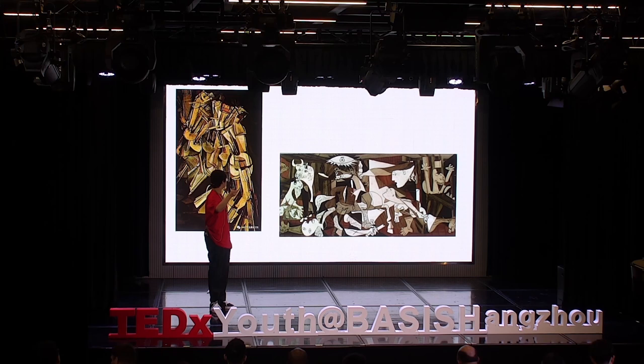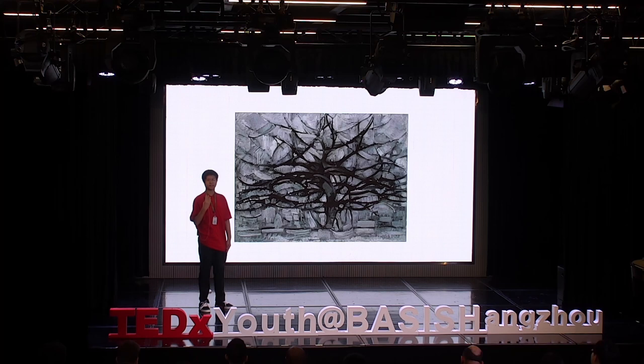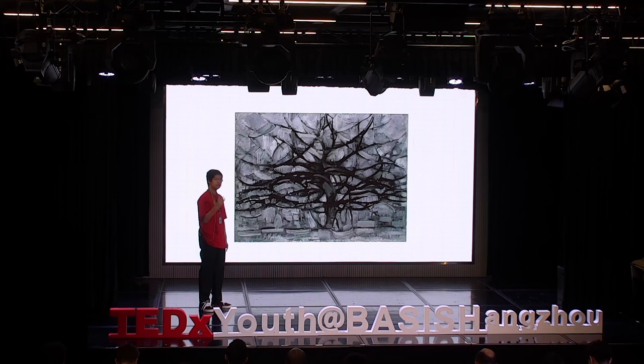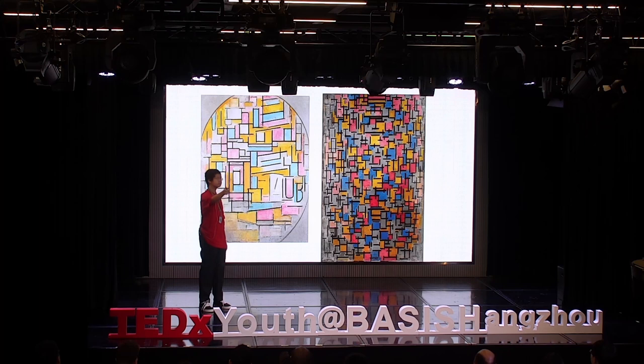As we see here, this is one of the paintings that Mondrian painted during this time. There is already a great shift between his earlier paintings and this one. He was painting a tree in this picture, using the classic Cubism approach of putting different perspectives of an object onto the same canvas.